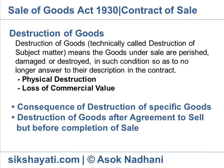Destruction of goods after agreement to sell but before completion of sale: Where there is an agreement to sell specific goods and subsequently the goods are destroyed without any fault on the part of the seller or buyer before the risk passes to the buyer, the agreement is void. This rule applies in case of destruction of specific goods after the formation of contract of sale, but does not apply for contracts for sale of unascertained or future goods. If the title of the goods has already passed to the buyer, the buyer must pay for the goods, though the goods cannot be delivered.